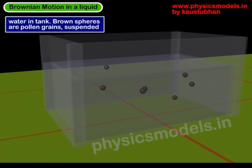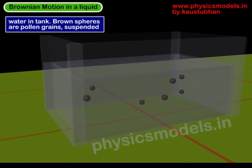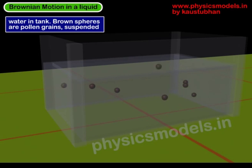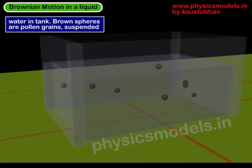So let's take a tank of water as shown here. Water is filled up to a particular height, and the brown spheres represent the pollen grains. They are slightly exaggerated to make it easy to see. You can see that immediately the pollen grains have started moving, although the water is stationary. And this movement of pollen grains is not just for 5 or 10 minutes — it can happen throughout the day or for days on end.